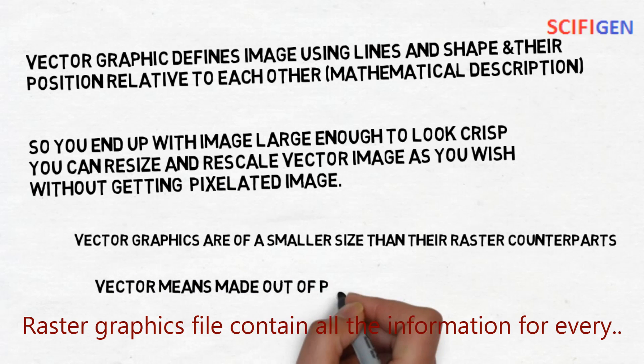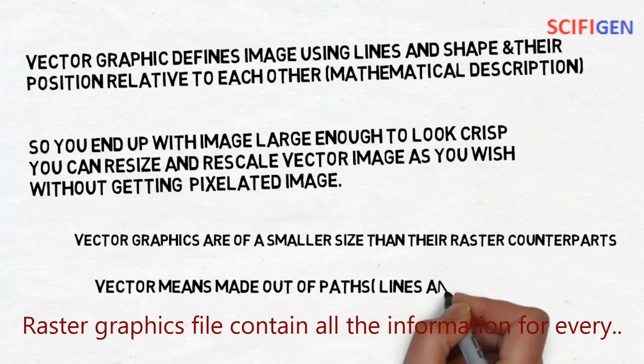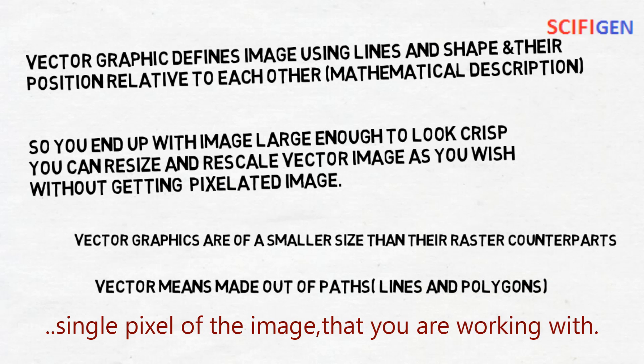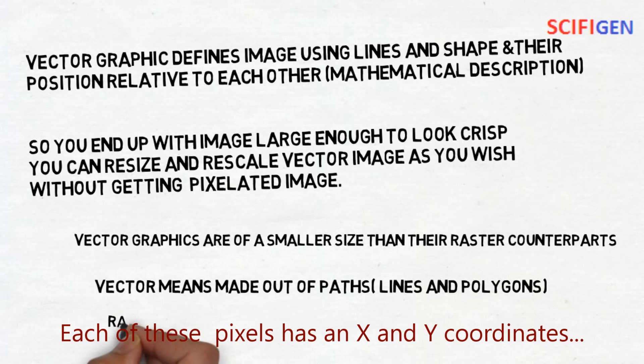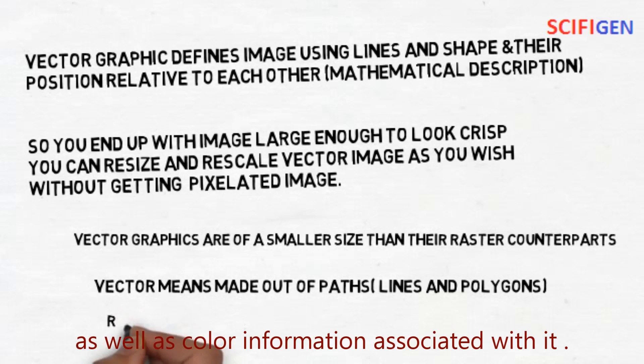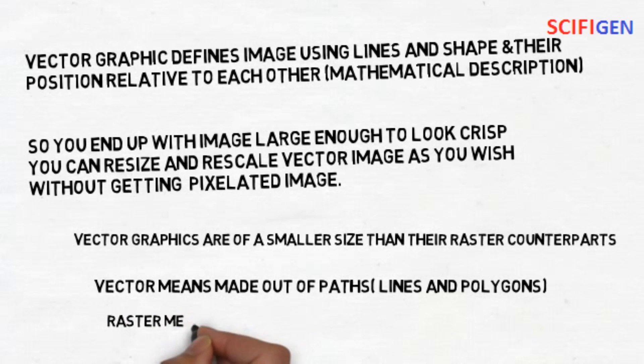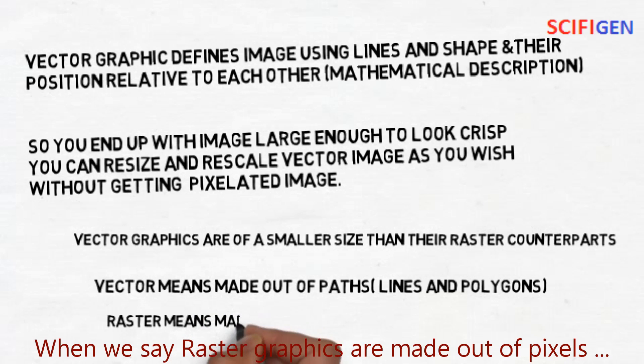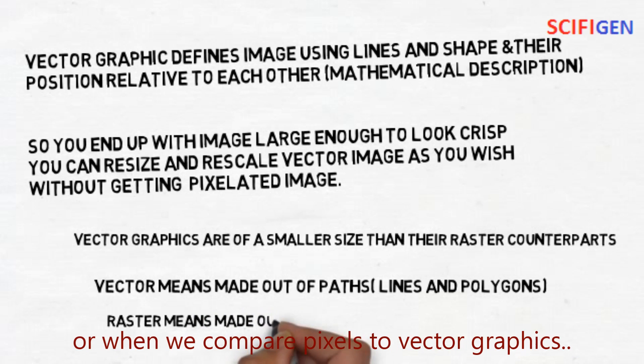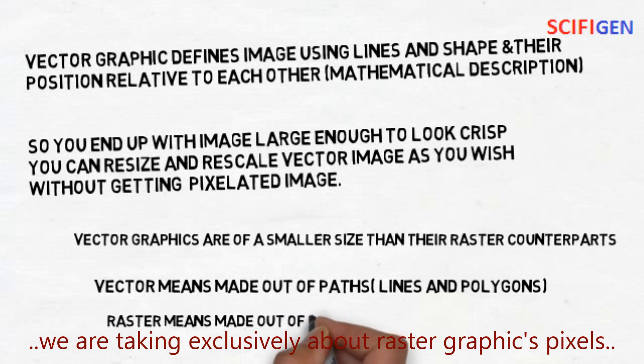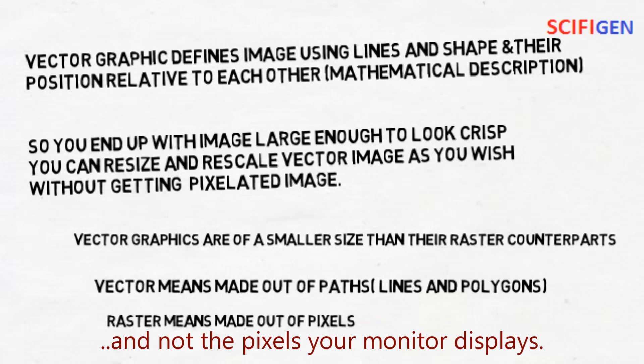Raster graphics files contain all the information for every single pixel of the image that you're working with. Each of these pixels has X and Y coordinates as well as color information associated with it. When we compare pixels to vector graphics, we're talking exclusively about raster graphics pixels and not the pixels your monitor displays.